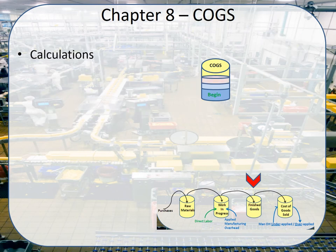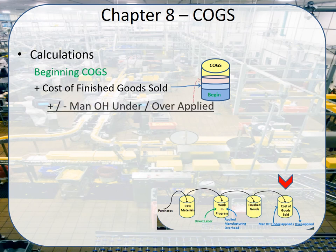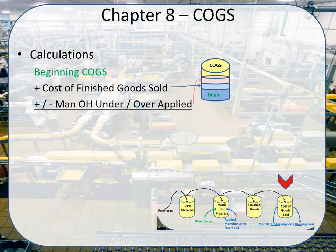For cost of goods sold, the calculation starts with the beginning cost of goods sold if there are any, and the first thing you bring in is the cost of finished goods that we actually sold from our finished goods bucket — so it flows from one to the other. There will be an adjustment for manufacturing overhead under- or over-applied. And you end up with your total cost of goods sold for the period, which impacts the income statement.